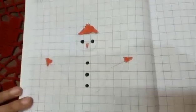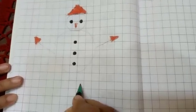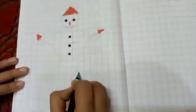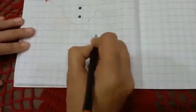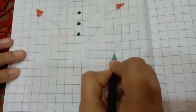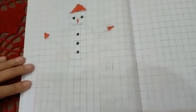Now our snowman is complete. So write snowman. S, N, O, W, M, A, N. Snowman. Thank you.